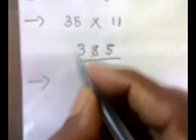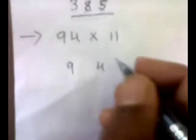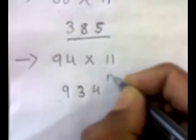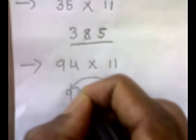Now we will take another example. Let's say 94 by 11. Again, we will put 9 and 4 as it is, and we will add 9 plus 4, that is 13. So we will put 3 in the middle, and we have 1 carry. Now we will add this carry to 9.